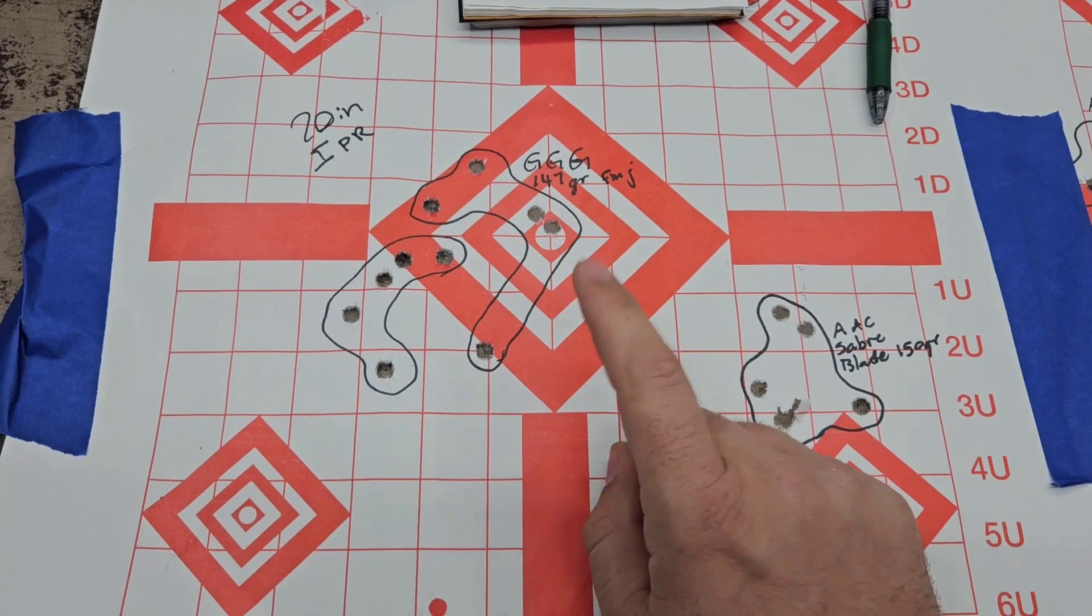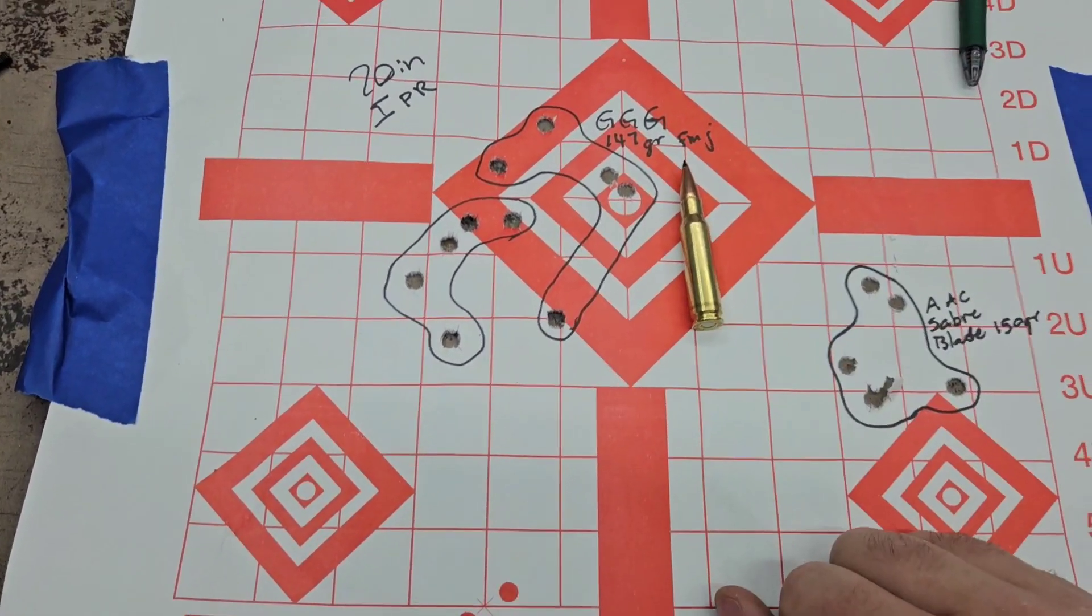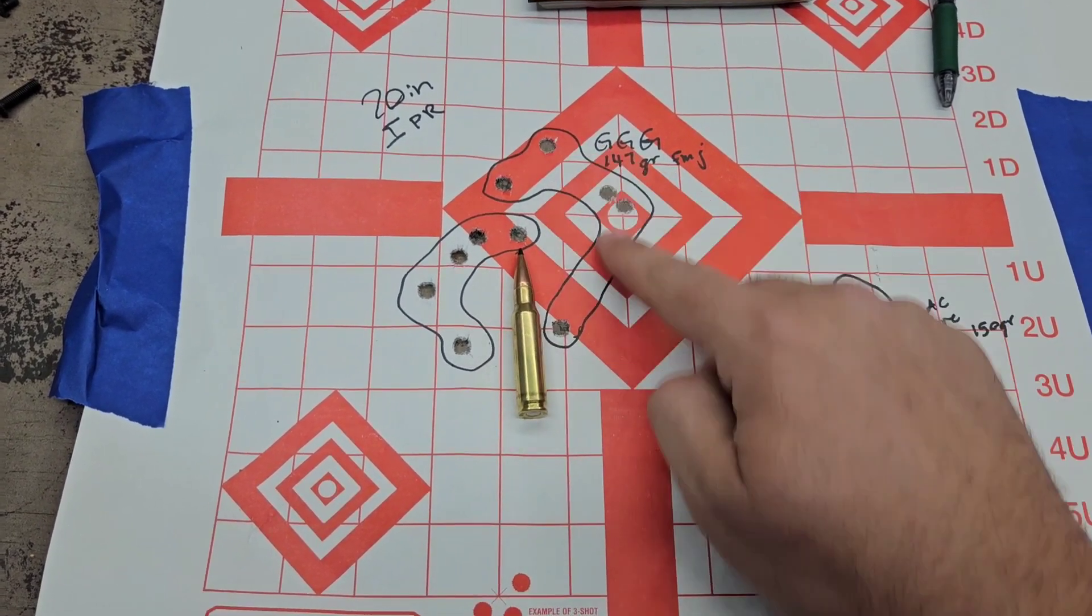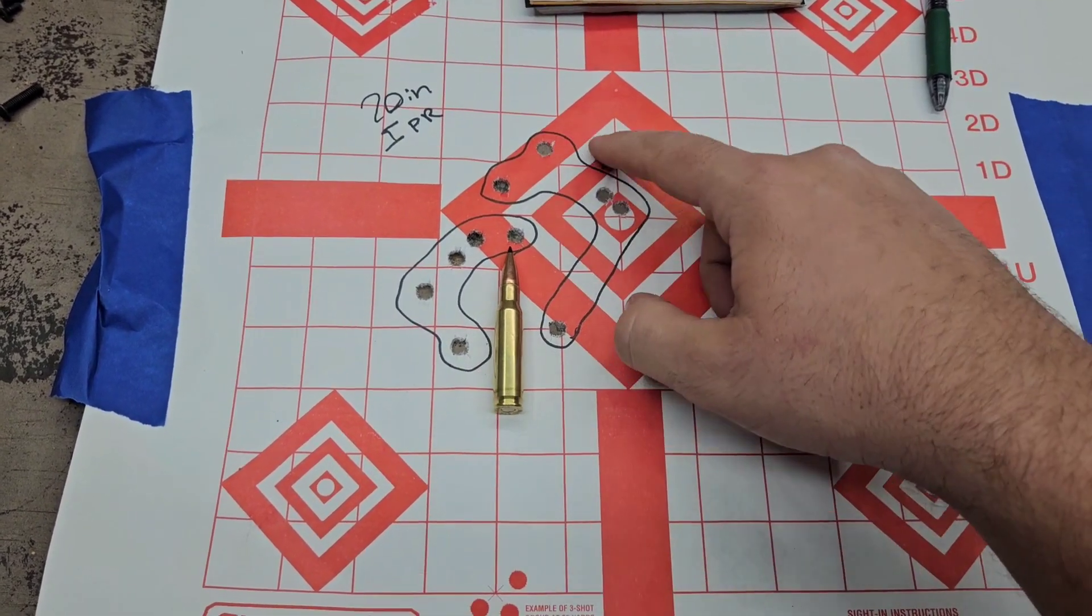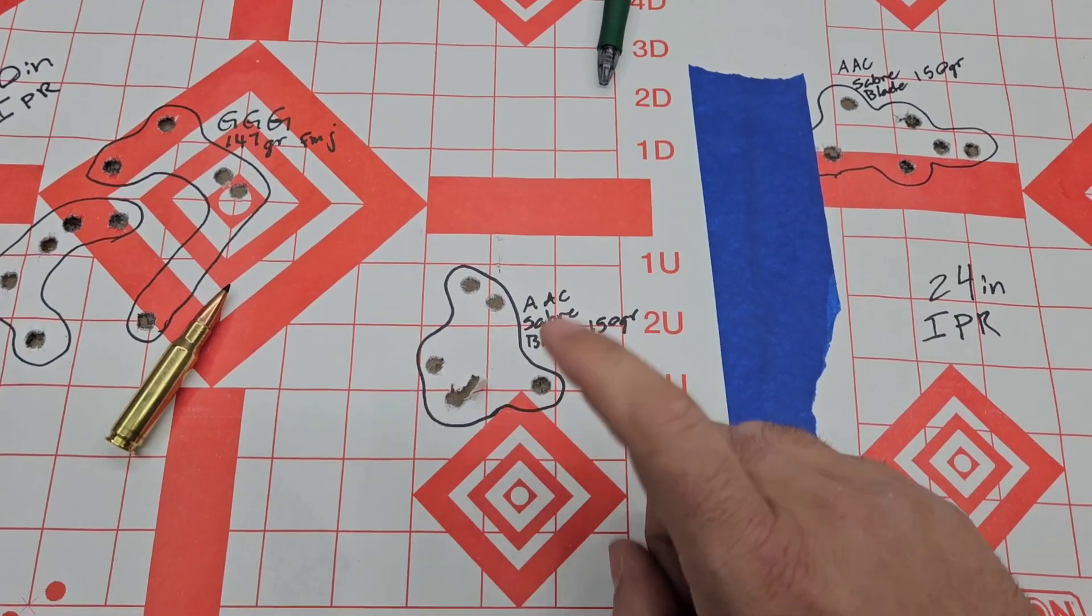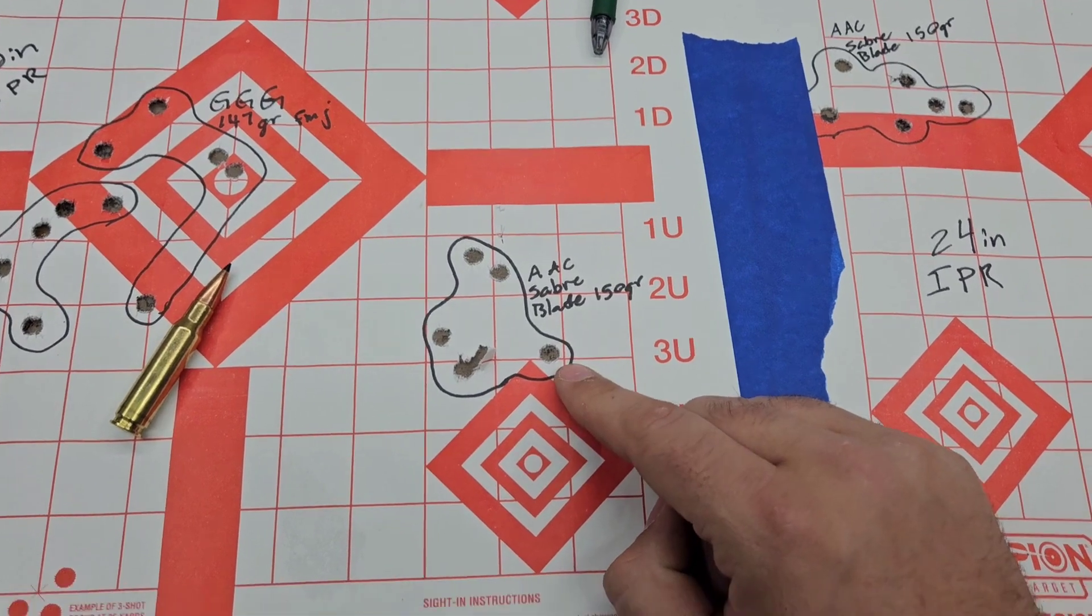Switching over to the 20-inch gun. GG&G, a little bit tighter, not by much. This was the first group right here, and then the second group right here, made an adjustment.